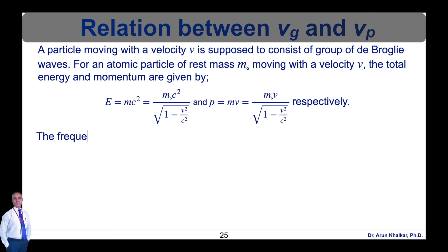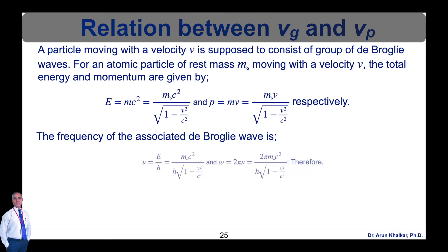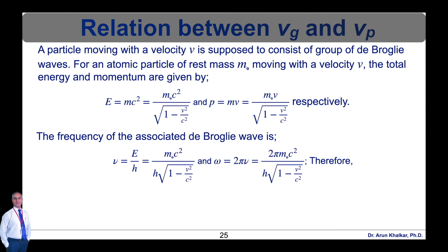The frequency of the associated de Broglie wave is ν = E/h, giving ν = m₀c²/[h·√(1 − v²/c²)], and ω = 2πν = 2πm₀c²/[h·√(1 − v²/c²)]. Differentiating this equation gives dω = (2πm₀/h) · (1 − v²/c²)^(−3/2) · (v/c²) · dv. This is equation number 1.